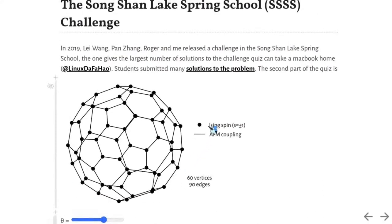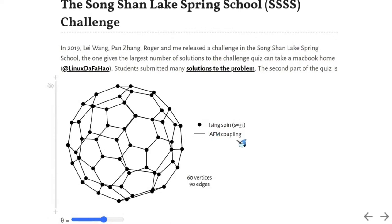Each vertex represents an icing spin, which can take value plus or minus one. And each edge represents an anti-ferromagnetic coupling between two spins, and this coupling is uniform.